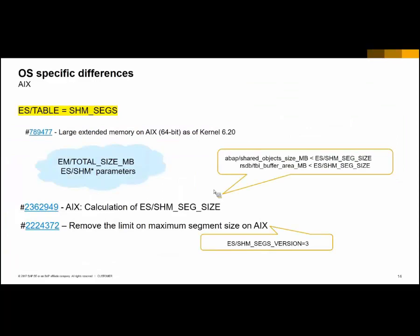For AAX servers, parameter ES_TABLE should be set to SHMSEX, which switches to the alternative implementation of the extended memory. In this case, extended memory size is defined by parameter EM_TOTAL_SIZE_MB. The amount of segments and each segment size can be set automatically using profile parameters mentioned in the relevant SAP note. The areas for the ABAP table buffer and the ABAP shared objects, which are both located in extended global memory, cannot be distributed over multiple segments — they must be formed from continuous memory fitting in one single segment. As from the patch level specified in this note, there is a new version of SHMSEX that removes the limit on segment size. To switch to this implementation, set profile parameter EA_SHMSEX_VERSION to 3.